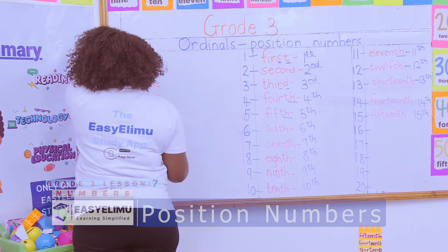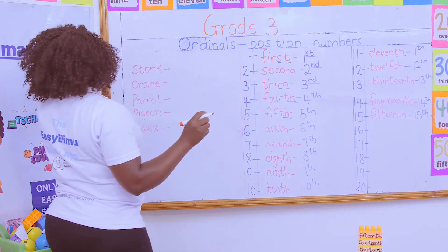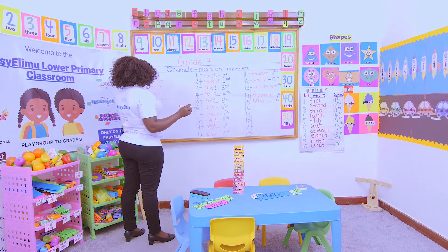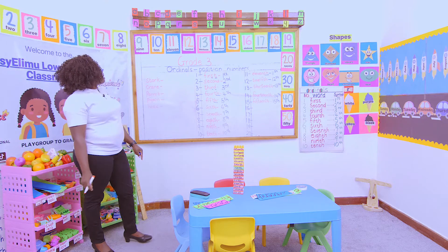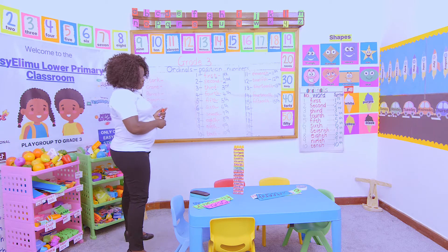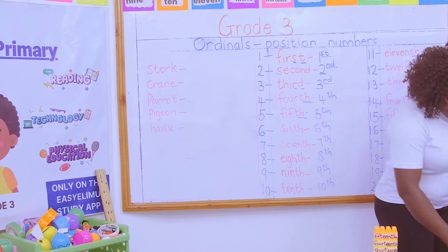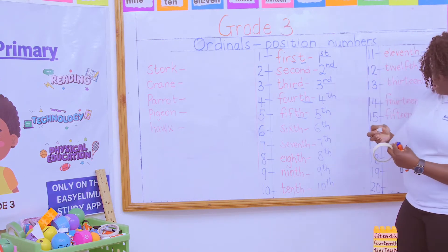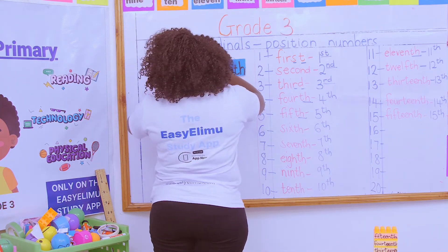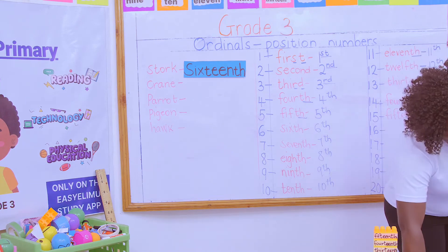I saw a pigeon, and I saw a hawk. They were all resting on an electric pole. From the left side, it was the stork, followed by the crane, followed by the parrot, followed by the pigeon, and followed by the hawk. So I decided to name each position starting from where we had stopped. The stork appeared in the 16th position.